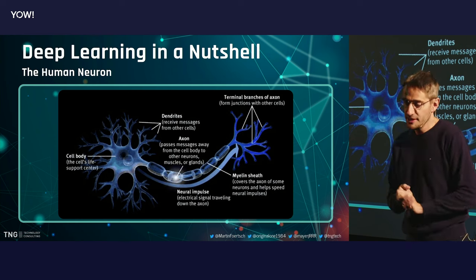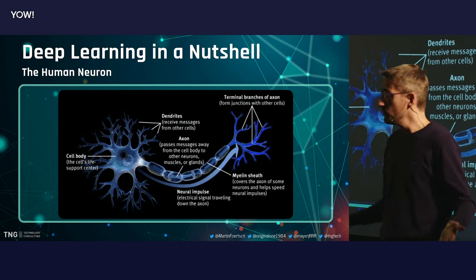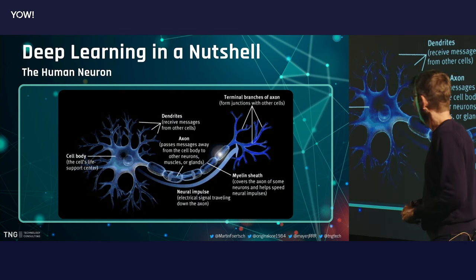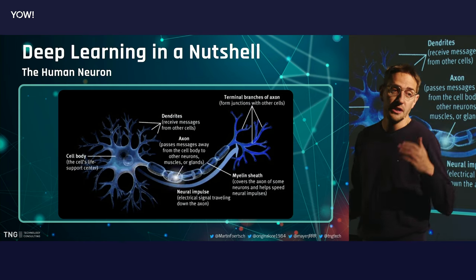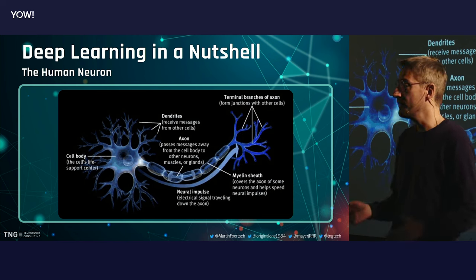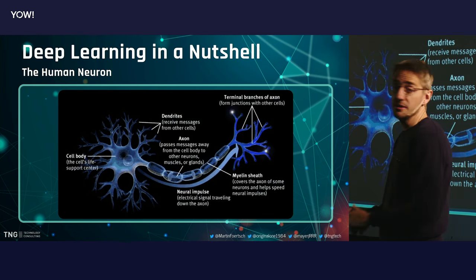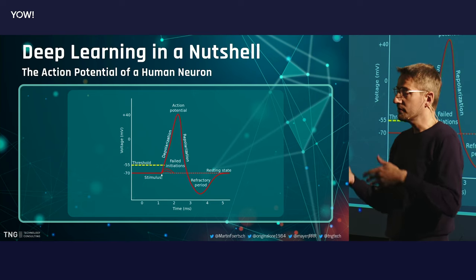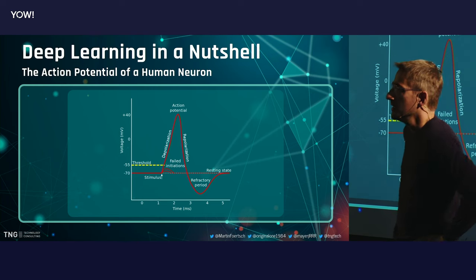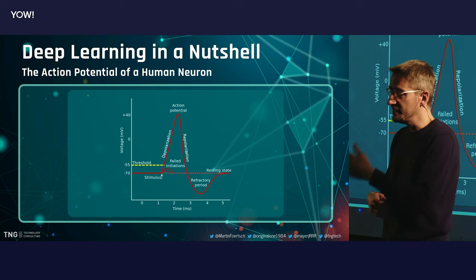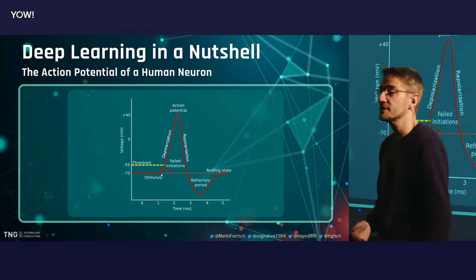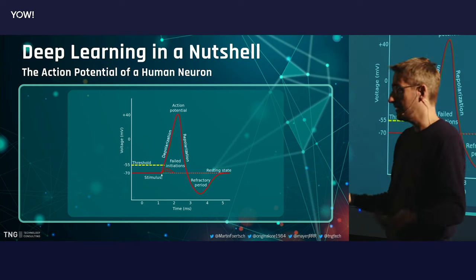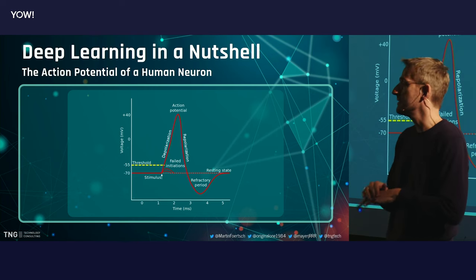Now that we've seen how the traditional approach works, let's see how neural networks work. Neural networks are basically inspired by nature. What we are doing is mimicking the behavior of a neuron — a cell which is connected to other cells and exchanges information via electric stimuli. We gather input from all surrounding neurons, and then check if this passes a certain threshold. If it passes the threshold, there is an action potential and the cell fires. If it does not exceed the threshold, we have failed initiation and nothing fires at all.